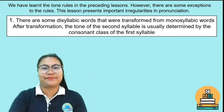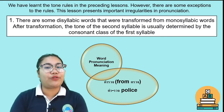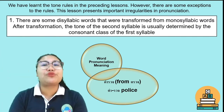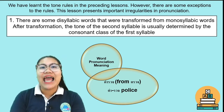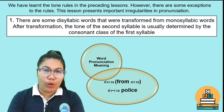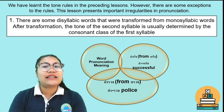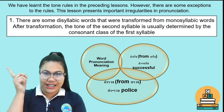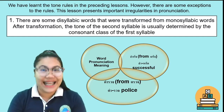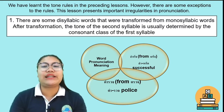Let's see the vocabulary. This is the word ตำรวจ. If you follow the tone rule, the word รวจ should be high tone. But this word comes from the word ตรวจ, and we pronounce ตรวจ with low tone. That's why we pronounce ตำรวจ with low tone. Here is the word สำรวจ. If you follow the tone rule, it should be high tone again, but สำรวจ comes from the word สรวจ, so we pronounce สำรวจ with low tone, which means 'successful' or 'to survey.'